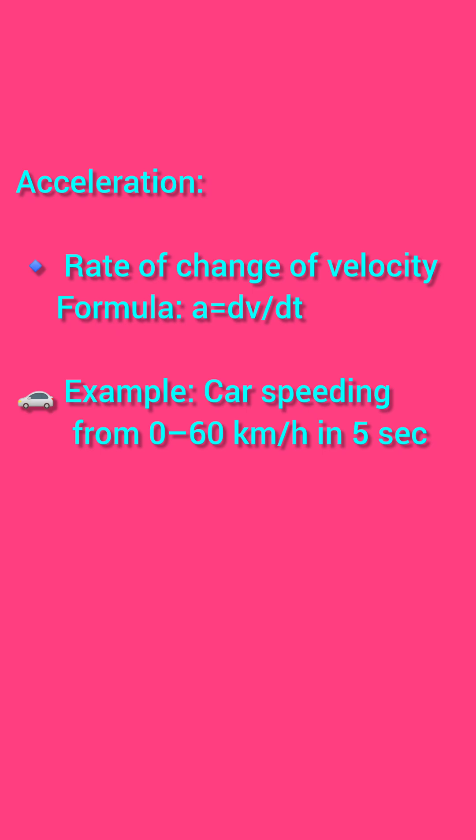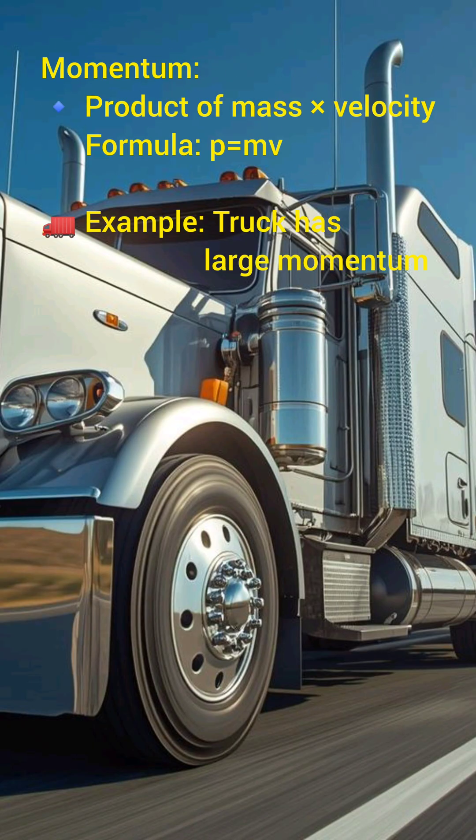Acceleration is the rate of change of velocity and it can be written as a equal to dv by dt. And momentum is the product of mass into velocity. For example, a truck has a large momentum because it has a huge mass, so it moves with more momentum.